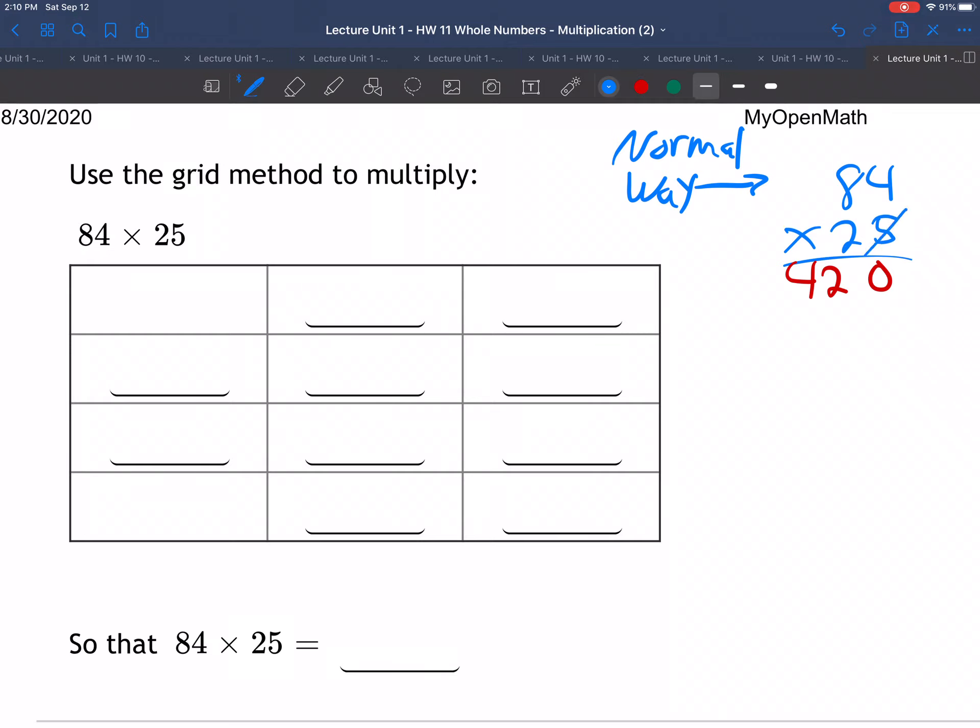And now this guy's done, in a sense, and we start with the 2. We're going to add a 0 to begin with. 2 times 4 is 8, and 2 times 8 is 16. And then we add these numbers. 0 and 0 is 0, 8 and 2 is 10, carry the 1. That's 11 right there. Carry the 1, and that's a 2. 2,100 is the answer.